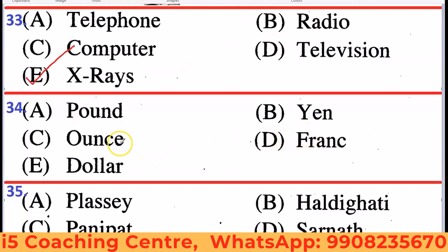Next: Pound, Yen, Ounce, Franc, Dollar. Ounce is a unit of weight, while all others — Pound, Yen, Franc, Dollar — are currencies of different countries. So Ounce is the odd one out.